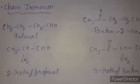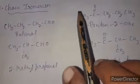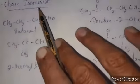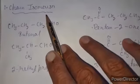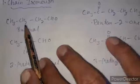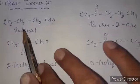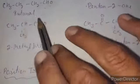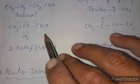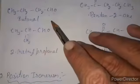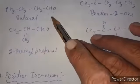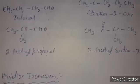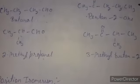Next we discuss isomerism in aldehydes and ketones. Aldehydes and ketones show four types of isomerism. First, chain isomerism: a linear four-carbon chain gives butanal, while a branched chain with a secondary carbon attached gives 2-methylpropanal — same molecular formula but different structural formula.